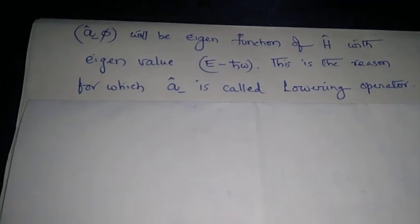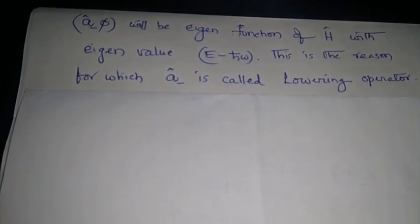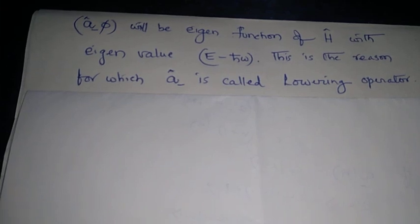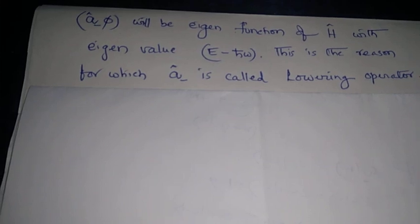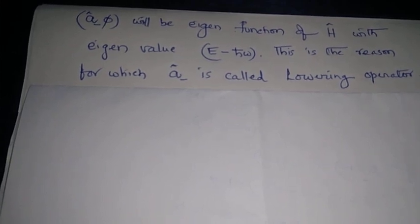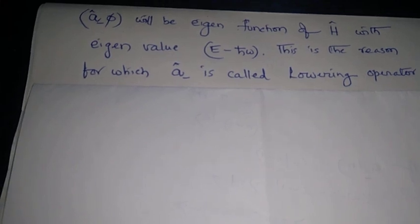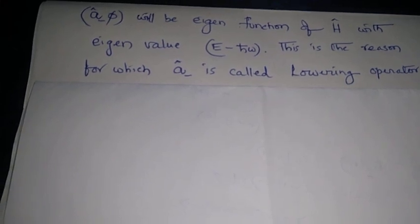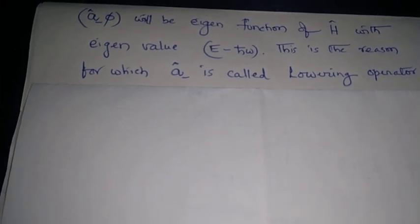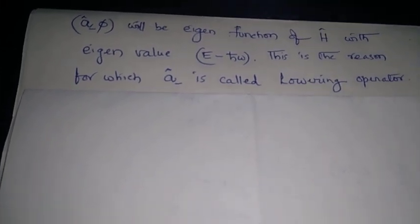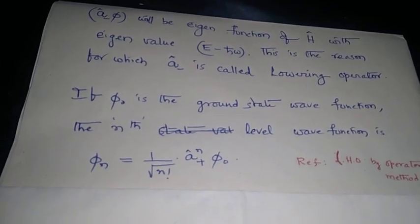Similarly, A minus into phi will be an eigenfunction of H hat with eigenvalue E minus H bar omega. Since the action of A minus on phi has lowered the energy eigenvalue from E to E minus H bar omega, we call this A minus operator the lowering operator.